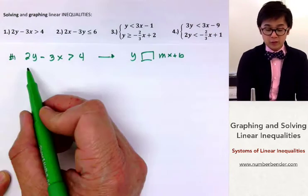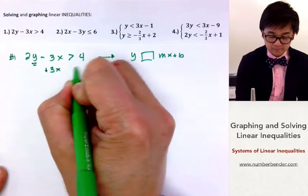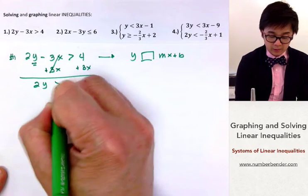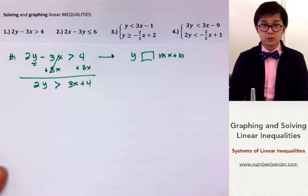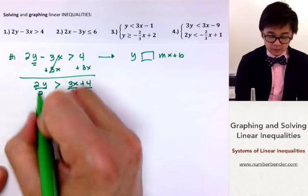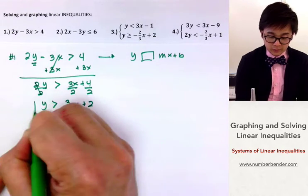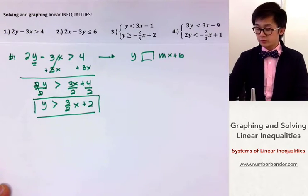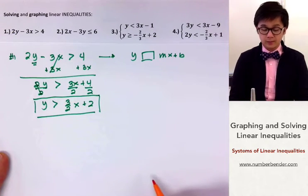To solve this we need to have y by itself. First we add 3x on both sides, leaving us with 2y greater than 3x plus 4. Since y is still not by itself, we divide each term by 2, leaving us with y greater than 3 over 2x plus 2. This is now our linear inequality which we can use to graph using a line.